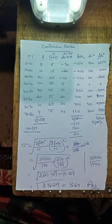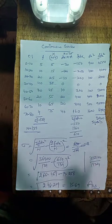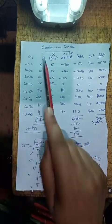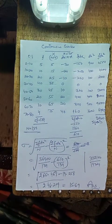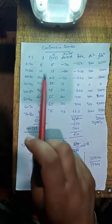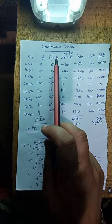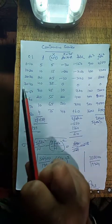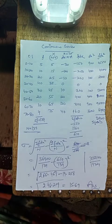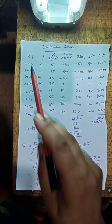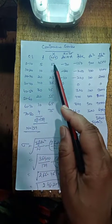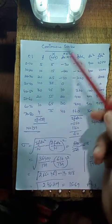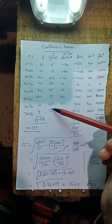Similarly, continuous series में — जैसे पहले discuss किया था — discrete और continuous series का formula same होता है। Continuous series में class intervals और frequency दी होती है। Class interval से mid value (x) calculate करते हैं: lower limit + upper limit / 2. For example: 0+10/2 = 5, 10+20/2 = 15, 20+30/2 = 25, similarly 35, 45, 55, 65, 75.